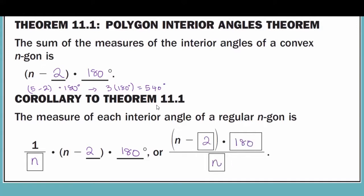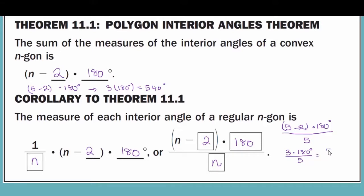Going back to our pentagon: it has five sides, so it would be (5 − 2) × 180 degrees divided by 5. That is 3 × 180 = 540 degrees divided by 5, which gives us 108 degrees. So the measure of each interior angle of a regular pentagon is 108 degrees.